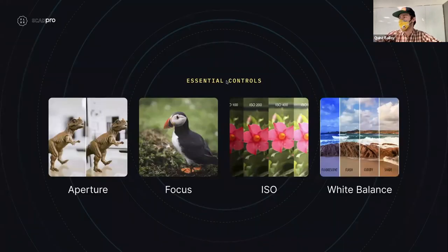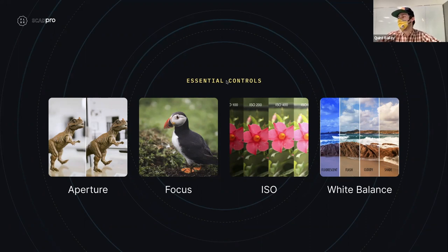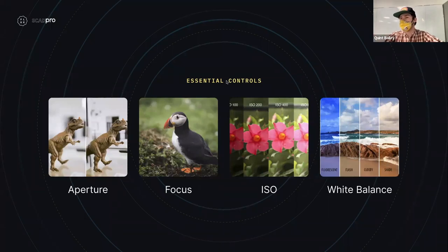These are a lot of the basics — the essential controls. You have the aperture, your ISO, focus, and white balance. Aperture and ISO are two components that determine your exposure, which is how bright or dark your image is as it is exposed to light.